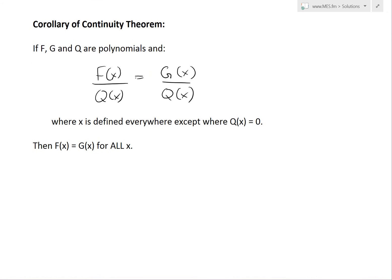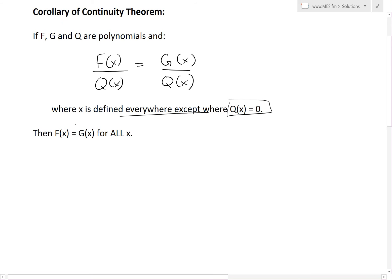if F and G and Q are polynomials, then you have this situation where you have F(x) divided by Q(x) equals to G(x) divided by Q(x), where x is defined everywhere except where Q(x) equals to 0. Then the theorem that comes across from continuity is basically F(x) equals G(x) for all x, even for the ones that have Q(x) equals to 0.